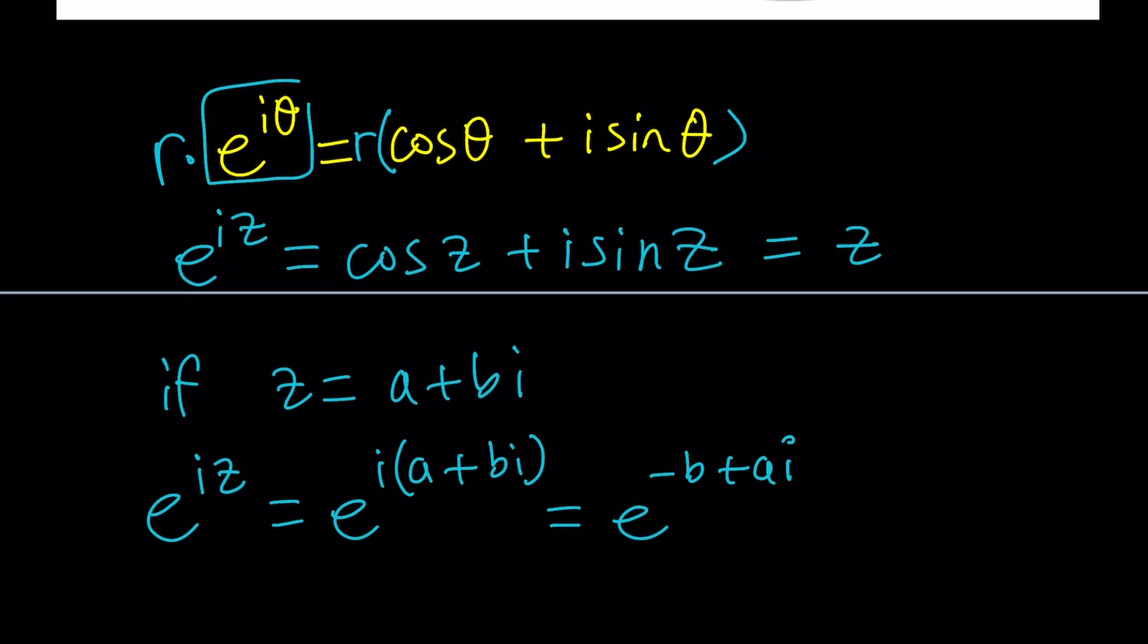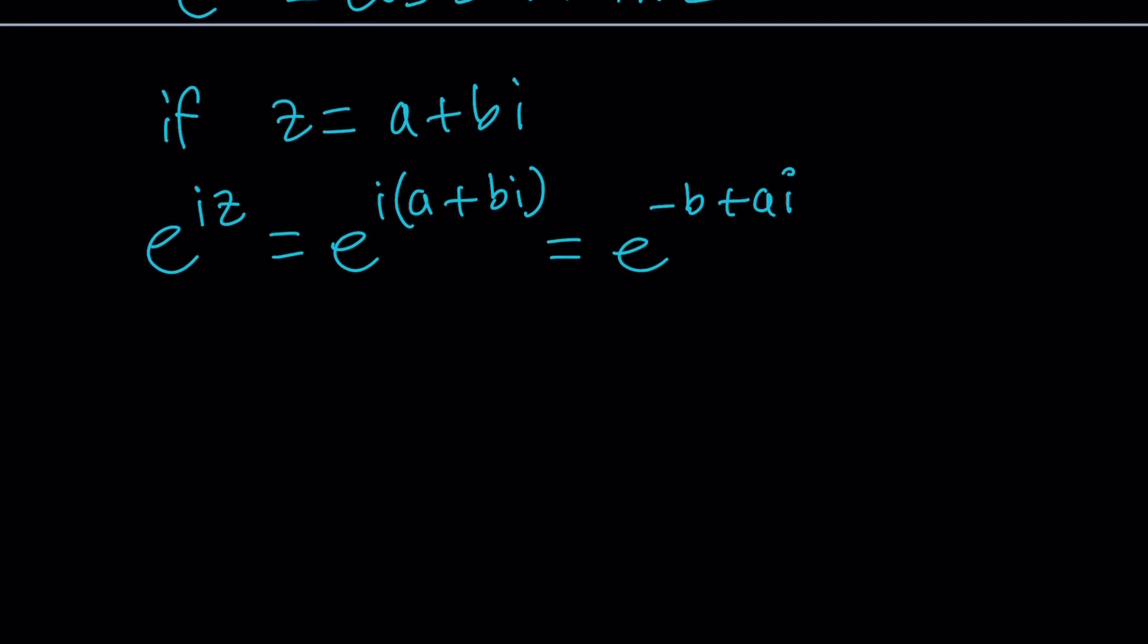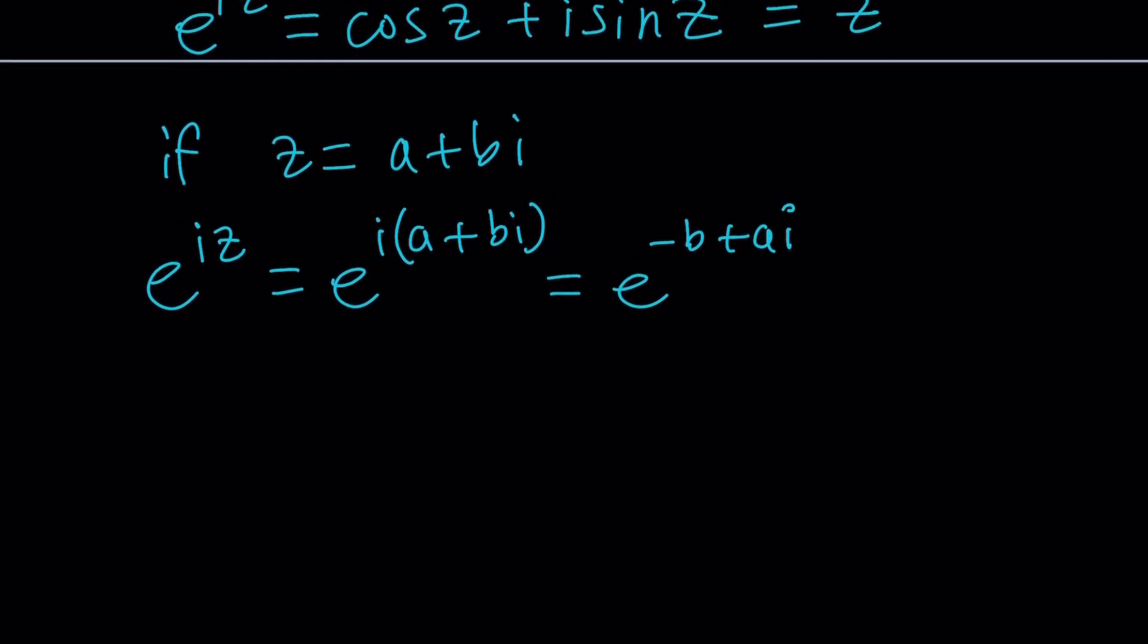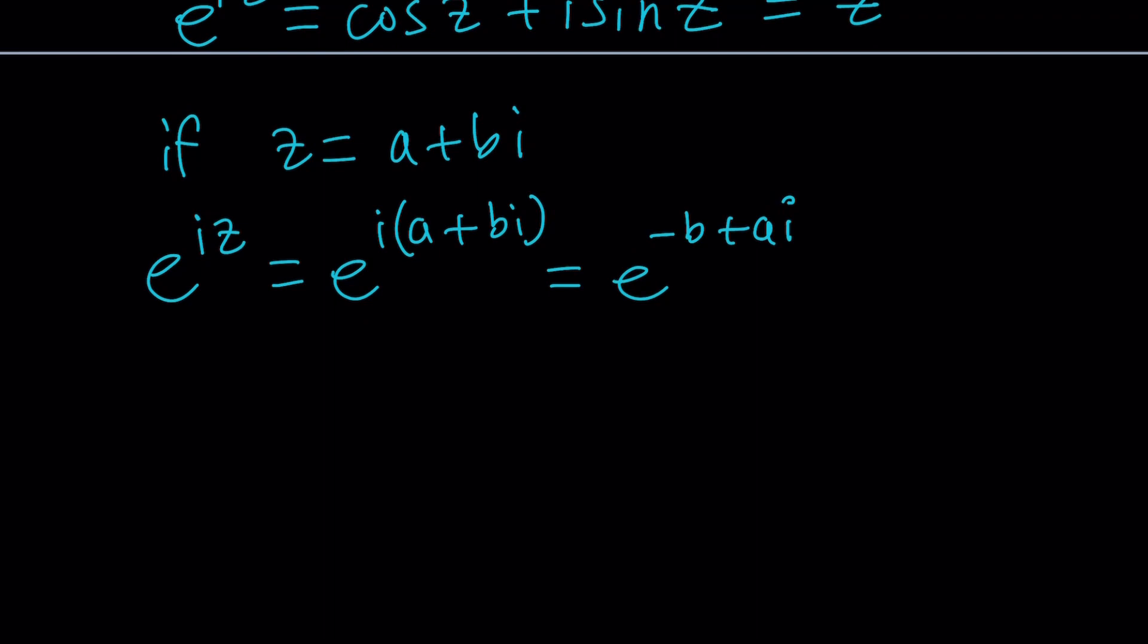So negative b plus ai is just a plus bi rotated π over 2 degrees. In which direction? That's for you to find out. But it's basically a 90-degree turn, and you can plot it and see that for yourself. Now, this is not going to make much sense unless we separate the real and imaginary parts. Of course, I mean using the properties of exponents.